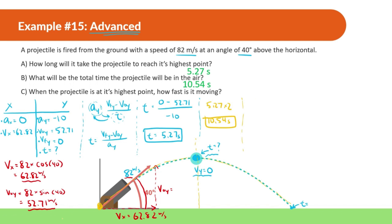Part C asks: when the projectile is at its highest point, how fast is it moving? You might think it's not moving, but that's not correct — if it weren't moving at all, it would just drop straight down. At its highest point, it's only moving in the x direction. Since velocity in x is constant, it's always 62.82 meters per second while in the air. So the answer is 62.82 meters per second.